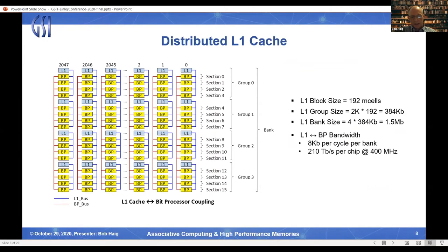Distributed local L1 memory supplies data to the bit processors, as illustrated in the diagram. Each L1 block and the bit processors it connects to are implemented on the same column pitch to minimize the distance between them. Specifically, each L1 block connects to four bit processors via a local bus highlighted in blue in the diagram. The architecture provides an L1 to bit processor bandwidth of 8K bits per cycle per bank. Additionally, the 16-bit processors per column in the bank are connected to a common bus highlighted in red in the diagram that provides additional data transfer capability.